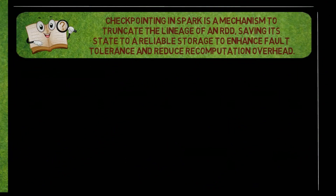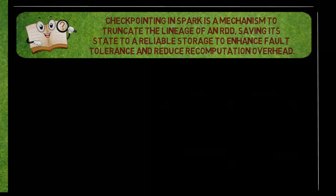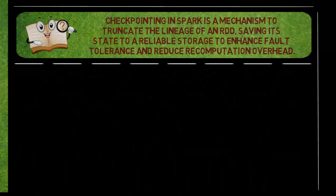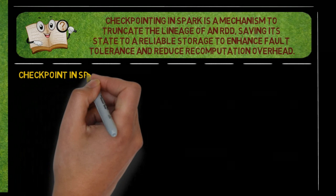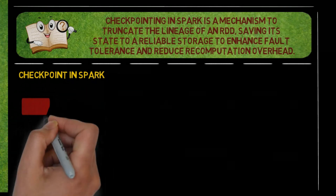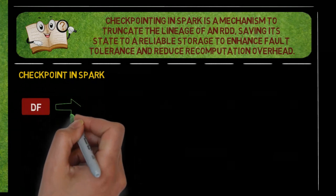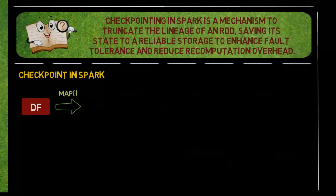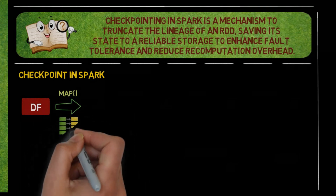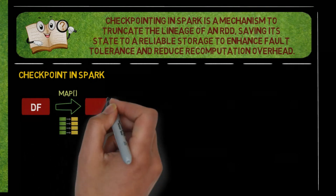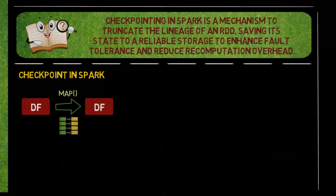Checkpointing in Spark is a mechanism to truncate the lineage of an RDD, saving its state to a reliable storage to enhance fault tolerance and reduce recomputation overhead. A checkpoint is a method for storing data to disk during data processing, usually required during long-running jobs or complex data pipelines. It reduces the data that is required to be recomputed in case of failure.